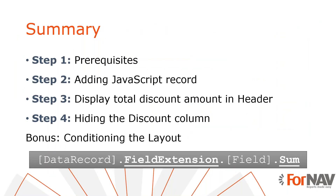Let's recap what we just did. We wanted to show the sum amount being discounted in an invoice. We used the ForNAV designer to add a data record into the sales invoice layout, then added a text box to the header to display the sum of the discount amount values. We used the 'show output' property to show or hide the discount column based on the sum value. Finally, we changed the 'on print' property to change the color of the discount and unit price columns, also based on the sum value of the discount amount.